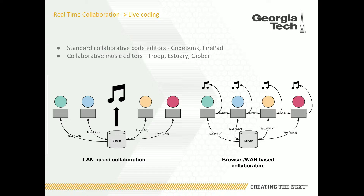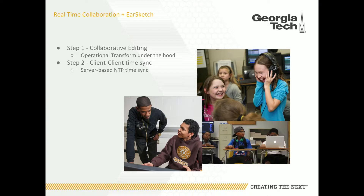We also looked at musical collaborative coding editors like Troop, which is a local area network-based editor with a client app for collaborative editing; when you execute code it runs on a server node and handles musical synchronization. There's also Estuary and Jibber, which are browser-based editors for wide area network collaboration. But client-to-client synchronization in a browser-based environment can be tricky for co-located playback. The two main challenges were implementing the collaborative text editing and the client-to-client synchronization.